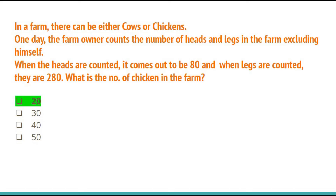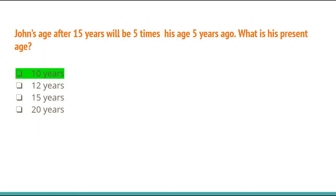In a farm there can be either cows or chickens. The farm owner counts 80 heads and 280 legs. What is the number of chickens? This is interesting — try it in the comments. The answer is 20, option A. Next, John's age after 15 years will be 5 times his age 5 years ago. Let present age be x: x + 15 = 5(x − 5), solving gives x = 10 years. Option A, 10 years, is the correct answer.